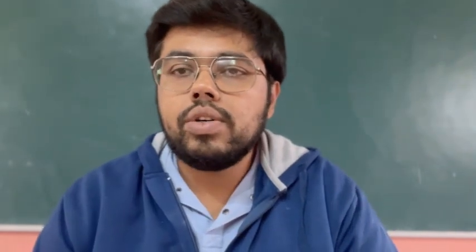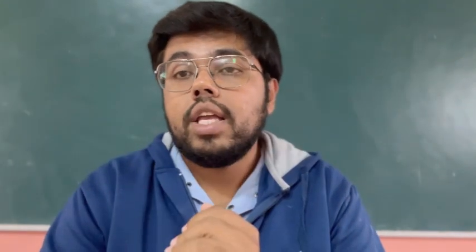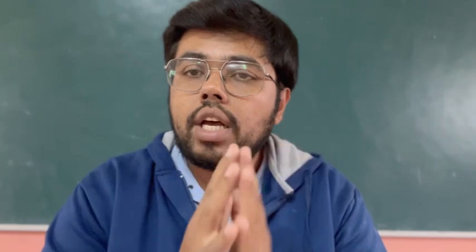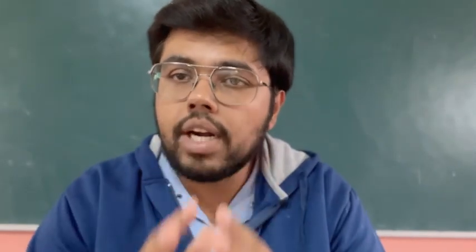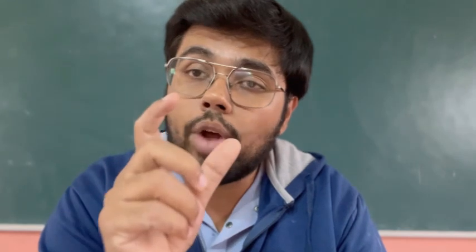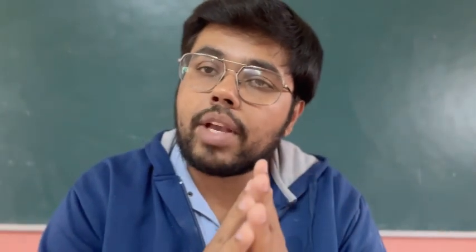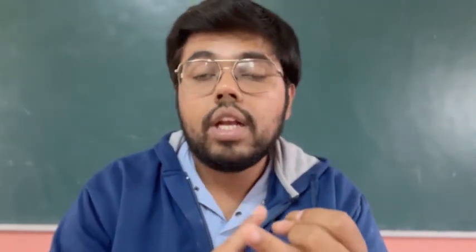In the polynomial chapter, practice finding the product and sum of zeros. Alpha plus beta equals minus b by a; alpha times beta equals c by a. He can ask for three marks: find the zeros and verify the relationship — split the middle term, find alpha and beta, then verify. Or he can give a quadratic polynomial and ask for the product and sum of zeros directly. Practice both types for two or three marks.